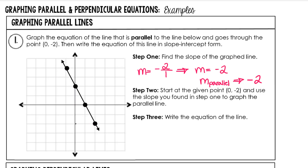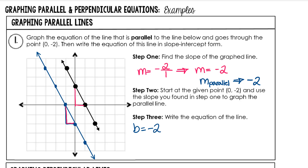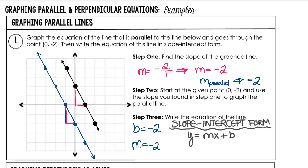Step 2, start at the given point (0, negative 2) and use your slope to find your next point. Going down 2 over 1, but running out of space, so go back to the original point and go up 2 and to the left 1. Our last step is to write the equation of the blue line. The y-intercept is at negative 2 and the slope of the parallel line is negative 2. The slope-intercept form is y equals mx plus b, so y equals negative 2x minus 2. We have now created the equation of a line that is parallel to the one that was graphed.